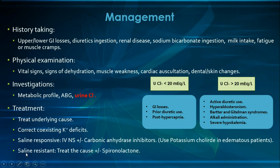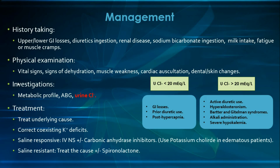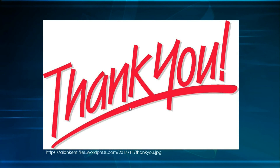For saline-resistant metabolic alkalosis, such as hyperaldosteronism or Cushing syndrome, treat the underlying cause — usually surgical resection of the tumor — and consider spironolactone, an aldosterone antagonist, if needed. This has been a summarized management plan for metabolic alkalosis; thank you for watching and see you in the next video on respiratory acidosis.